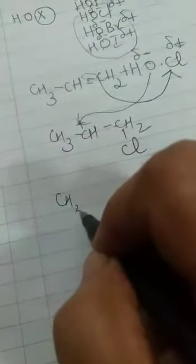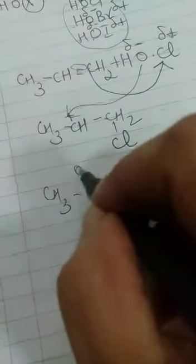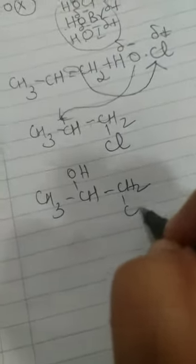Ab yeh positive charge hai. To yeh negative will go to this carbon. Anti-addition ho ga. So, you are going to get CH3, CH, OH and CH2, CL.